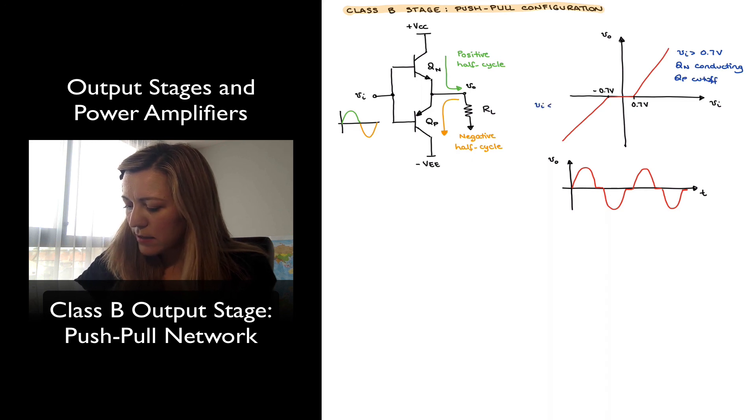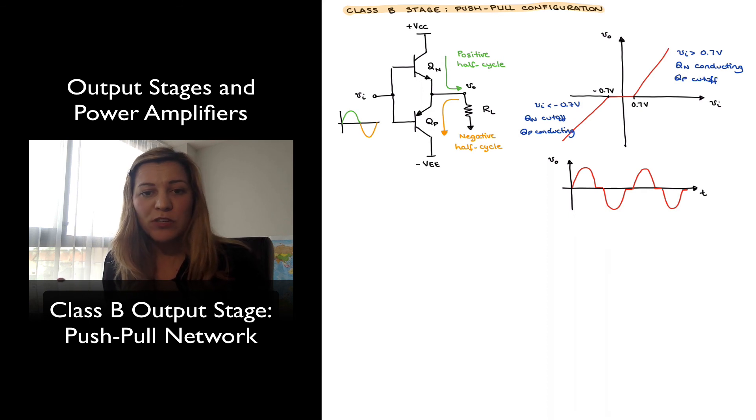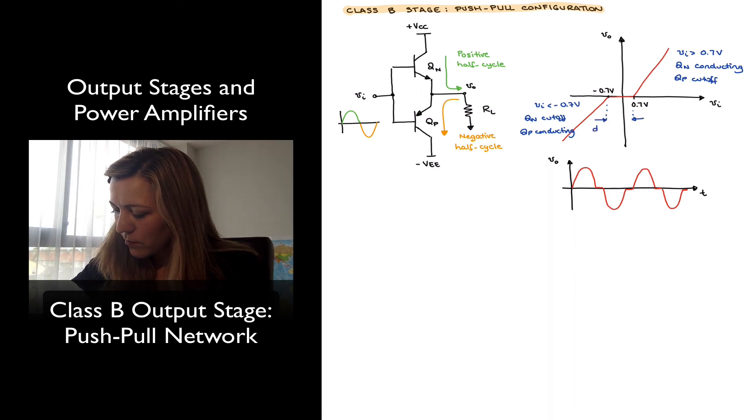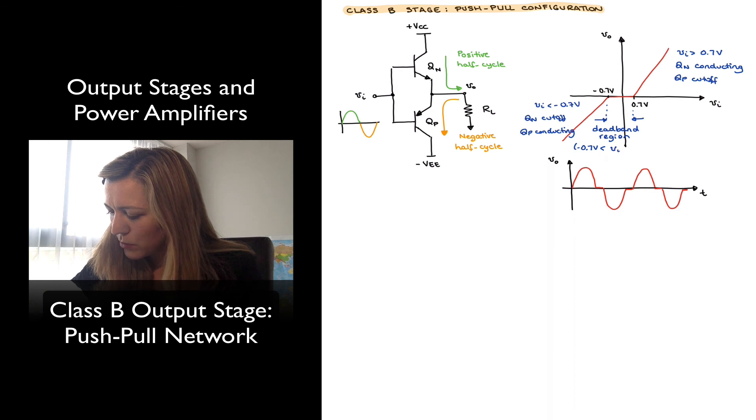When VIN is less than negative 0.7 volts, we have the opposite. QN is in cutoff, and QP is the one that's conducting. But notice that there is a region where VIN is between minus 0.7 volts and 0.7 volts, where both transistors are in cutoff, none of them is conducting. That's referred to as the deadband region. And so this region here, that would be the deadband region. And again, it corresponds to the region where VIN is in between minus 0.7 volts and 0.7 volts.